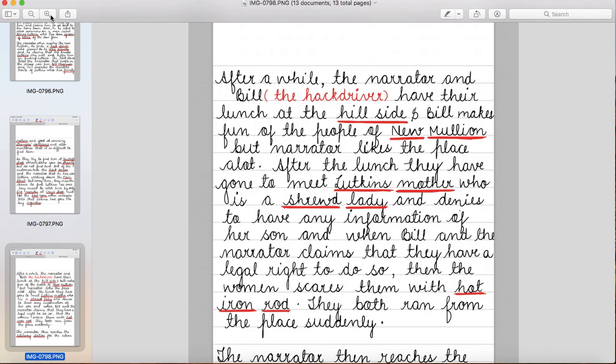After the lunch, they have gone to meet Lutkins mother who is a shrewd lady and denies to have any information of her son. Uske baad, woh log Lutkins ki mother ko milne jate hai but woh bahut shrewd lady hai, bahut smart hai dimag se aur woh Lutkin ka pata unko bilkul bhi nahin deti hai.